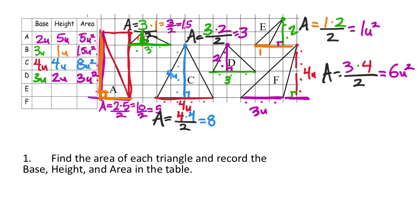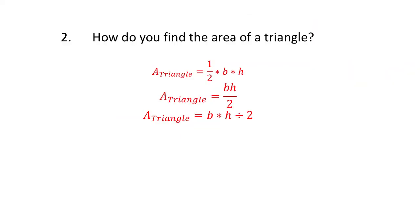So filling in the table: E had a base of one unit, a height of two, and an area of one square unit. F had a base of three, a height of four, giving an area of six square units. How do you find the area of a triangle? This is showing three different ways — just like one of them. The top one: one half times B times H. Triangle equals one half B times H — base times height.